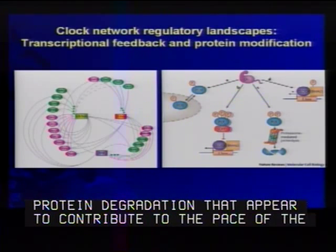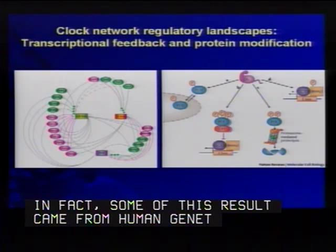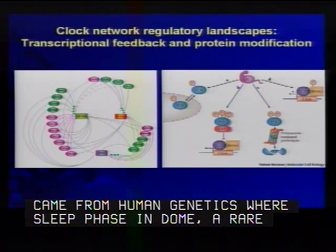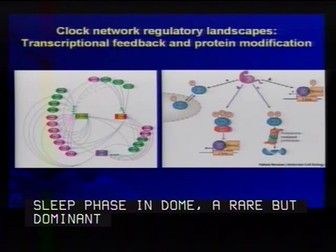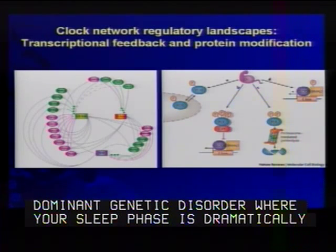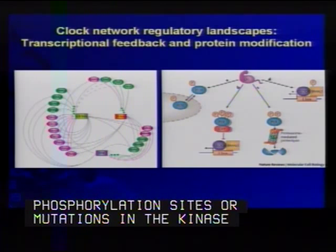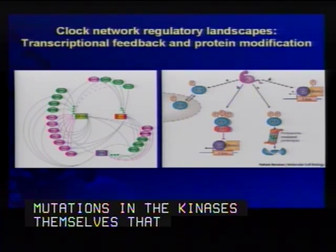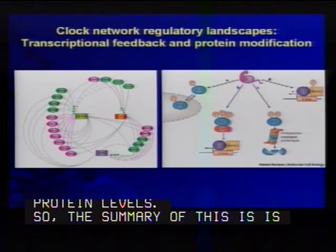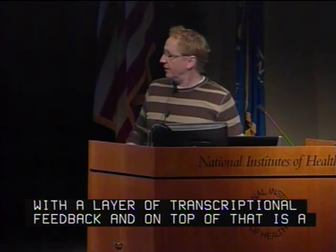Some of this result came from human genetics, where familial advanced sleep phase syndrome — a rare but dominant genetic disorder in humans where your sleep phase is dramatically advanced — turned out to actually involve phosphorylation sites or mutations in the kinases themselves that control PER protein levels. The summary is that the clock is controlled by a layer of transcriptional feedback and on top of that is a layer of regulated protein turnover.